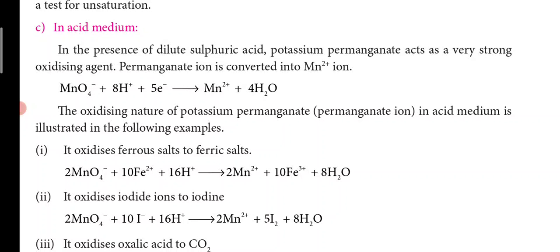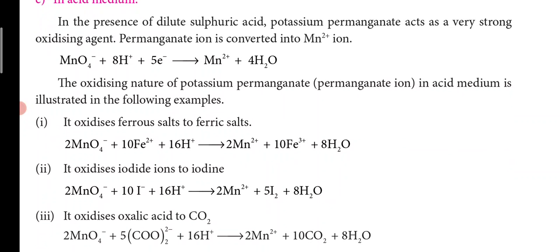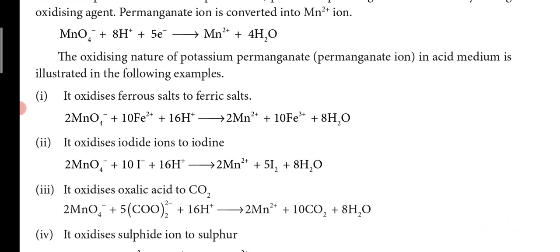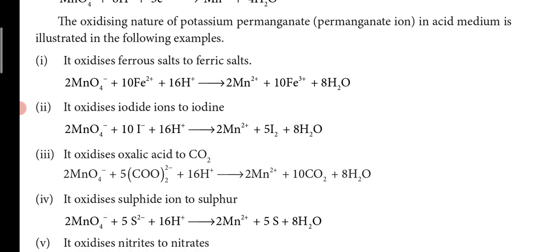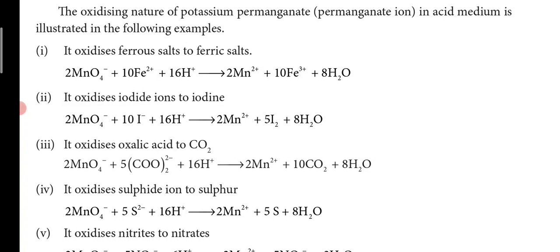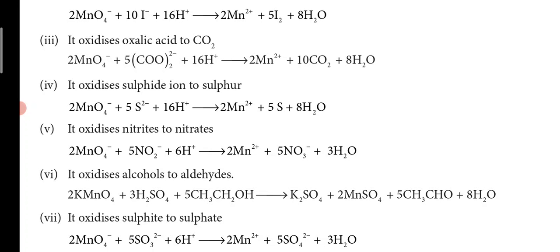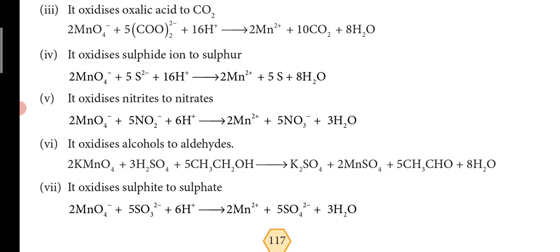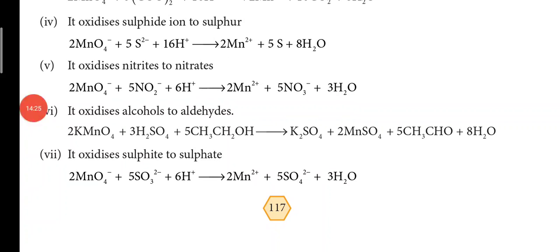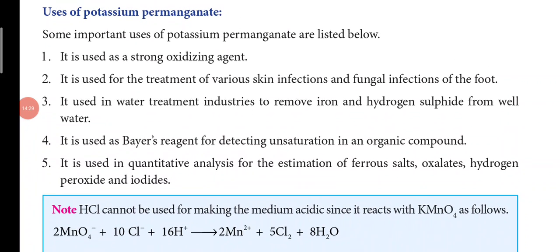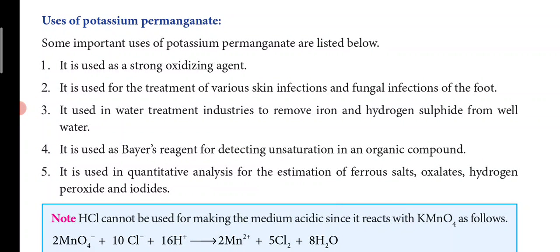In acidic medium, with dilute sulfuric acid, potassium permanganate acts as a strong oxidizing agent. The permanganate ion is converted into Mn²⁺ ion. It oxidizes ferrous salt to ferric salt, iodide ions to iodine, oxalic acid to carbon dioxide, sulfide ions to sulfur, nitrites to nitrates, and alcohols to aldehydes and sulfite to sulfate.